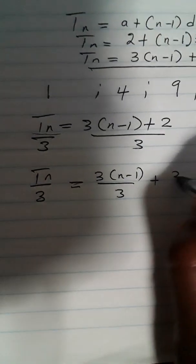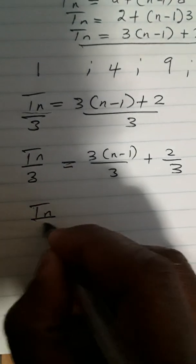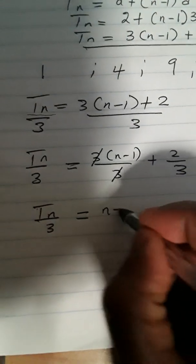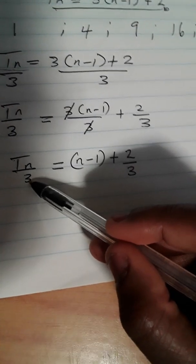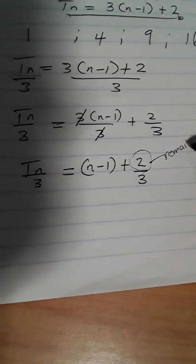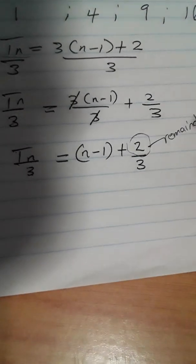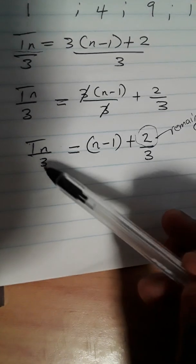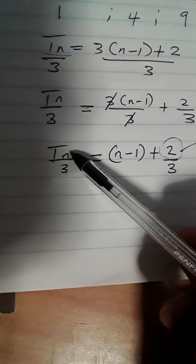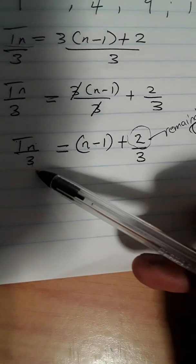We divide both sides by 3. We will have Tn over 3 equal to 3(n−1) divided by 3, plus 2 divided by 3. The 3 cancels, leaving n−1 plus 2 over 3. The remainder here is 2. In this linear sequence, when we divide by 3, the divisor is 3, the dividend is the sequence term, the quotient is (n−1), and the remainder is 2.